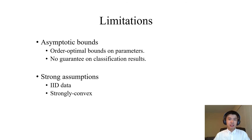Though these methods are claimed to be Byzantine robust, they have some key limitations in common. For example, they only provide asymptotic bounds which are far from practice. Specifically, they only provide order-optimal bounds on the error rates of parameters. However, even if such order-optimal bounds are given, there is no guarantee on the classification performance of the learned global model. Another main limitation is the strong assumptions made in these works — they assume the data is IID or the optimization problem is strongly convex, which usually are not practical in the real world.